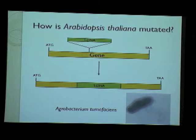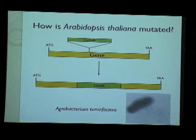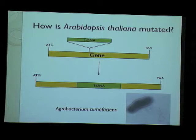Another question is how Arabidopsis thaliana is mutated. Mutation is done using a bacterium called Agrobacterium tumefaciens, which carries a plasmid called the Ti plasmid, or tumor-inducing plasmid. When a plant is infected with Agrobacterium, the Ti plasmid transfers a small part of its DNA — called T-DNA or transfer DNA — into the plant genome, integrating at a random location. We can then sequence the T-DNA and flanking genomic regions to find where it integrated and, if it has knocked out our gene of interest, use that mutant for further study.